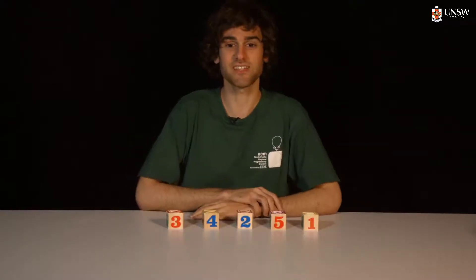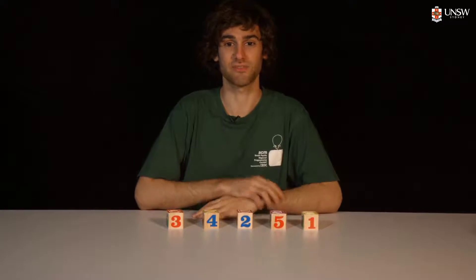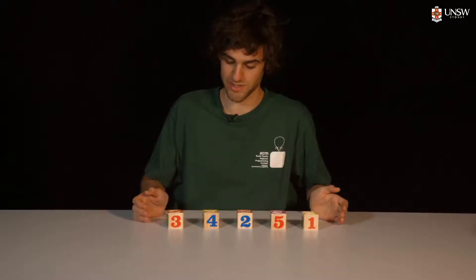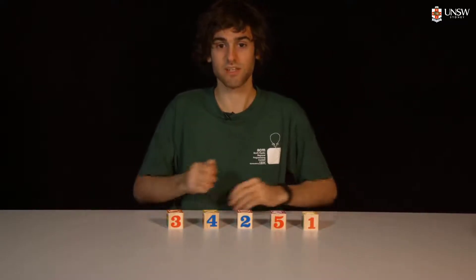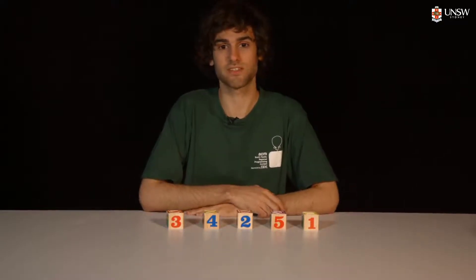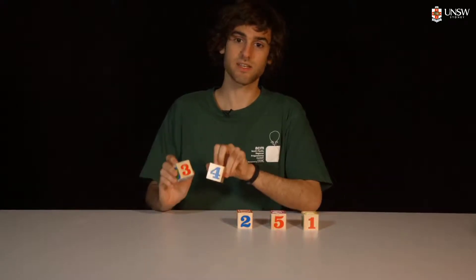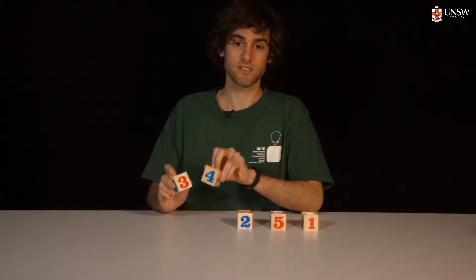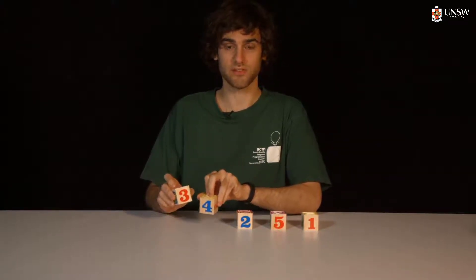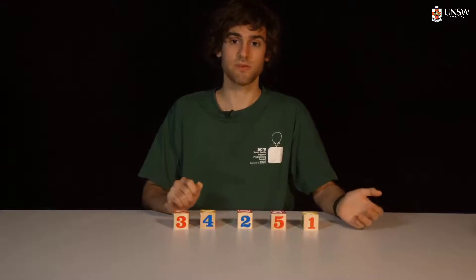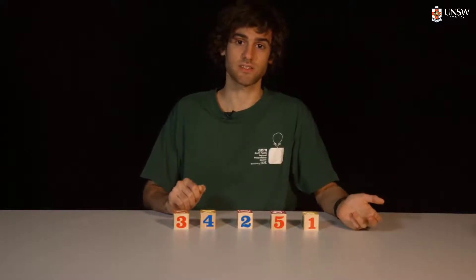If we take a larger case, for example if we have five elements, then we can formally apply this concept by continuously comparing two adjacent elements, swapping them if they are out of order, and then continuously repeating until our list is sorted.